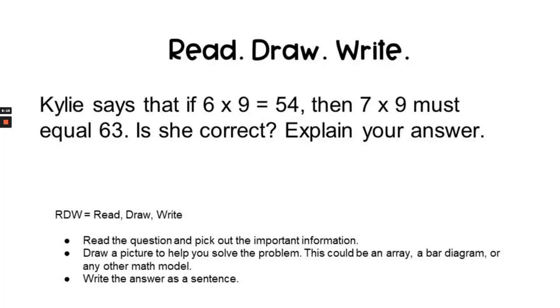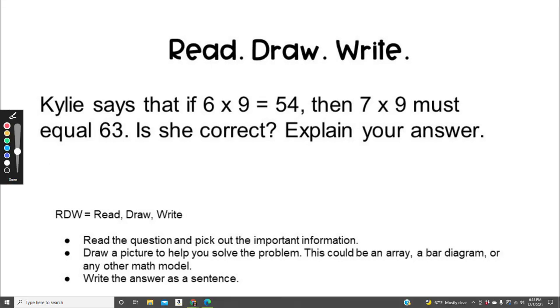Alright, let's try the Read, Draw, Write question using our strategies. Kylie says that if 6 times 9 equals 54, then 7 times 9 must equal 63. Let's see if she's correct.